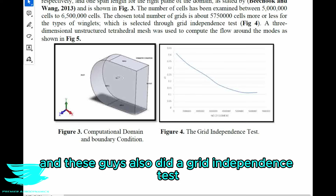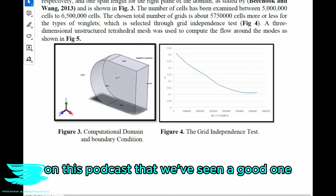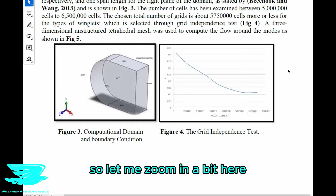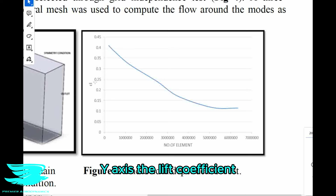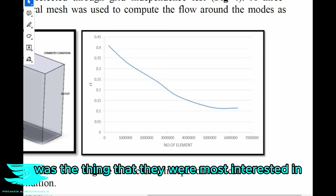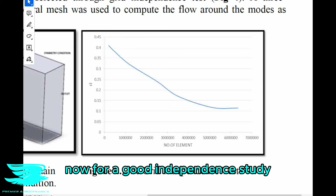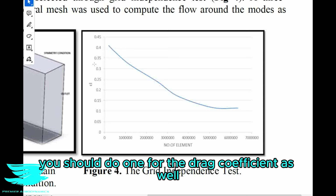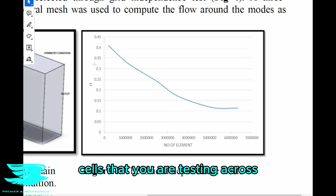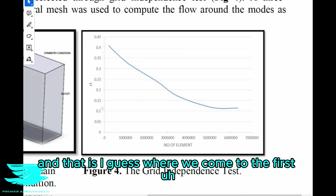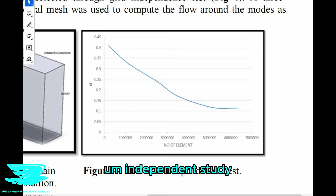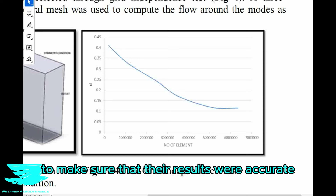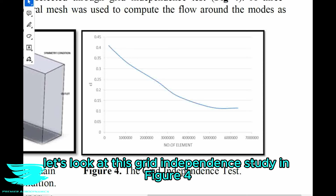These guys also did a grid independence test, which is nice to see. On the y-axis is the lift coefficient and on the x-axis is the number of elements. The lift coefficient was the thing they were most interested in, which is why they plotted it here. For a grid independence study, you should look at all the parameters you're interested in — so if you're interested in the drag coefficient as well, you should do one for the drag coefficient too. These researchers also looked at the drag coefficient, but they should have included it in this grid independence study. They only did the lift coefficient.